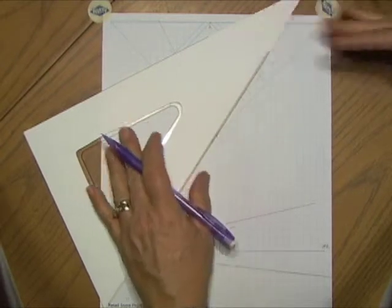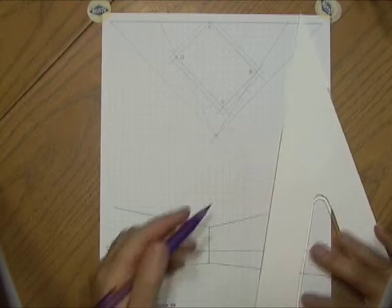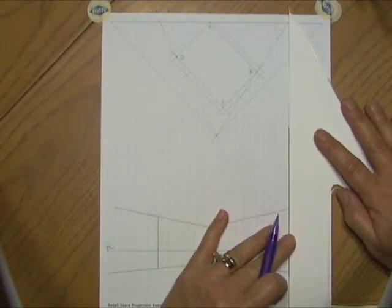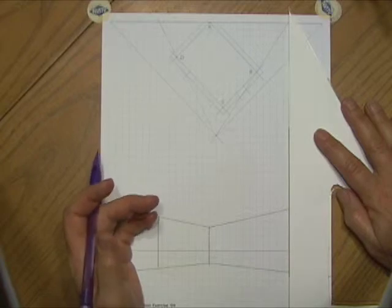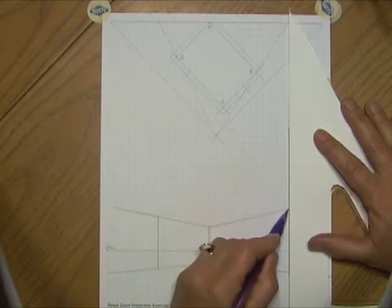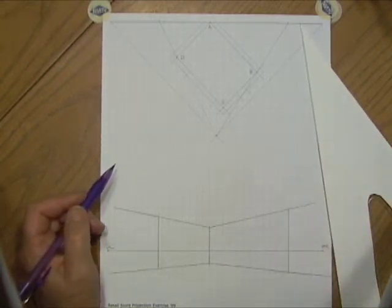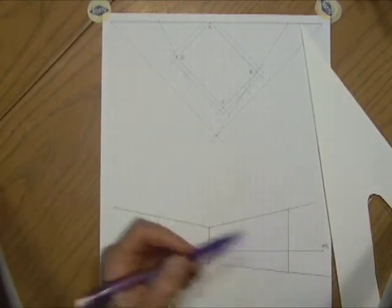Now we do corner B this way: corner B, station point, and up to the picture plane, and then back down again. It only needs to cross the wall line where we have it. Looks like I'm a little bit crooked there.